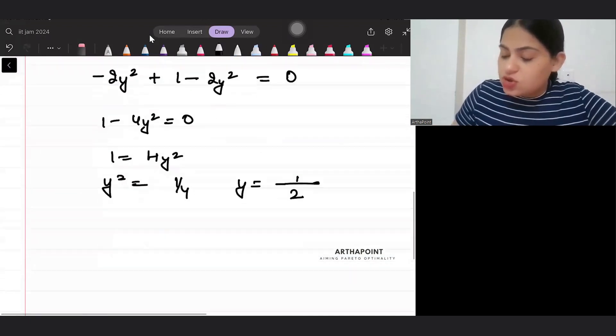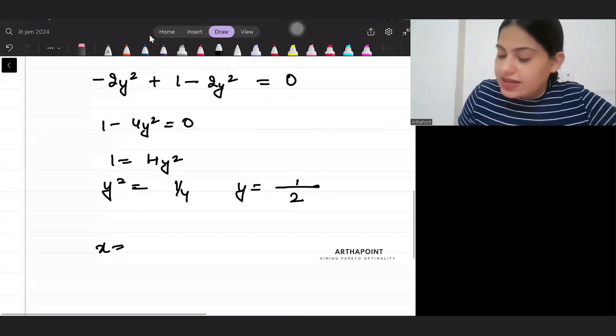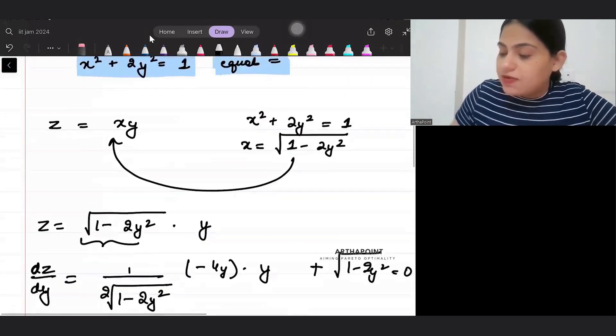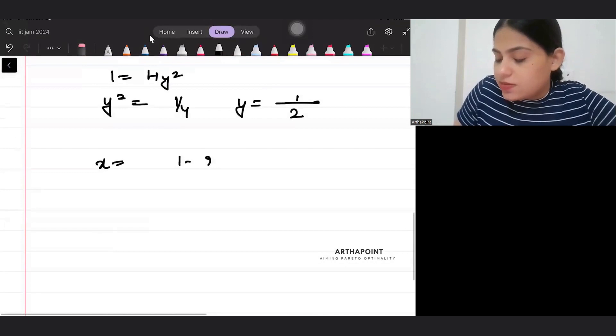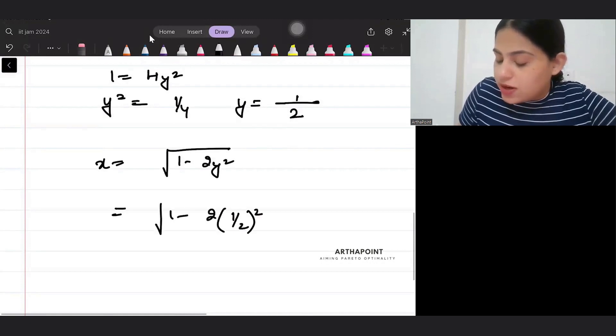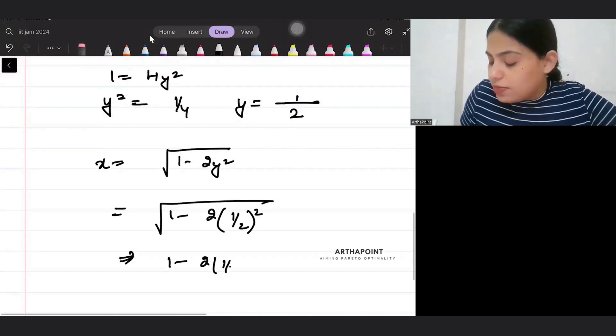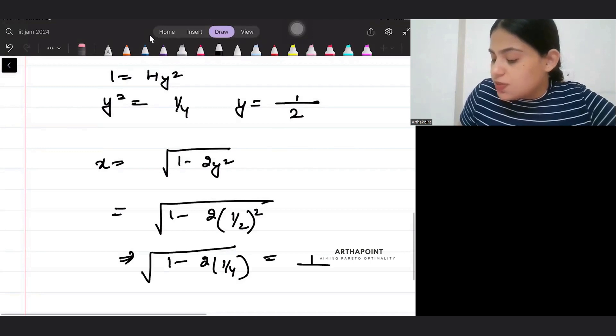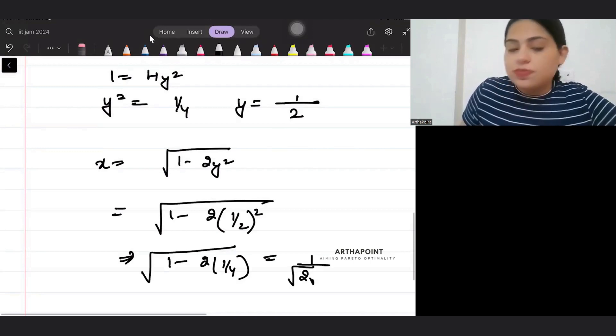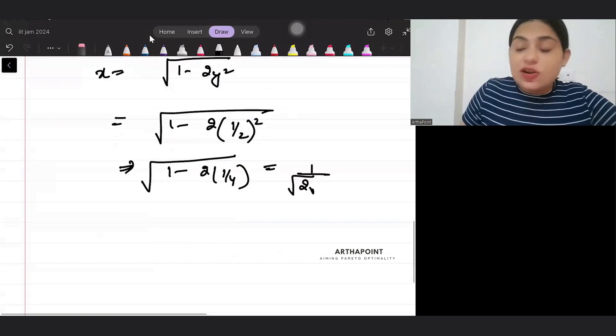If y is 1 by 2, it says what is the maximum value of function. So your x was defined by this: now 1 minus 2 y square under root. So x will be 1 minus 2 times 1 by 2 whole square under root, so this will be 1 minus 2 times 1 by 4 under root, so this will be 1 by root 2.